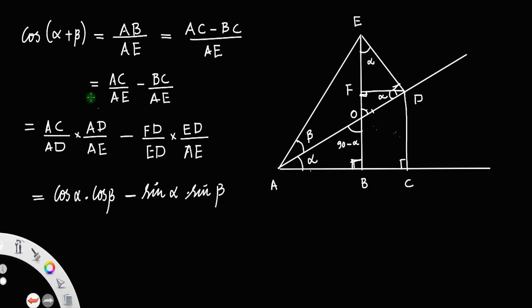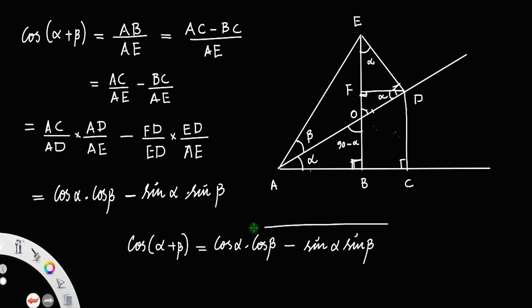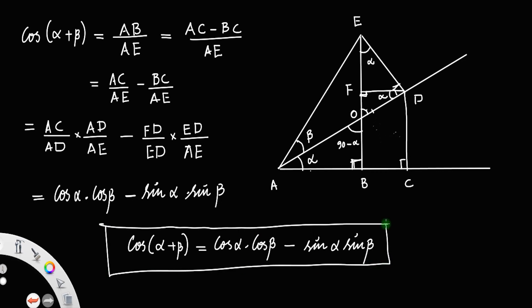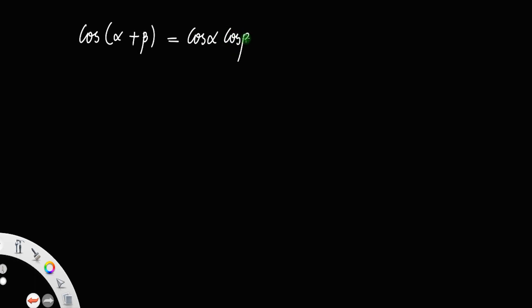Which means cos(alpha + beta) is equal to cos alpha times cos beta minus sin alpha times sin beta. So that is the result: cos(alpha + beta) = cos alpha cos beta minus sin alpha sin beta.